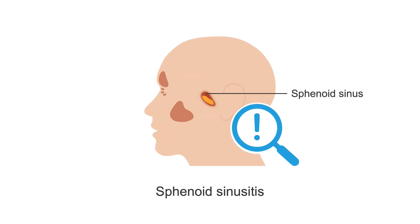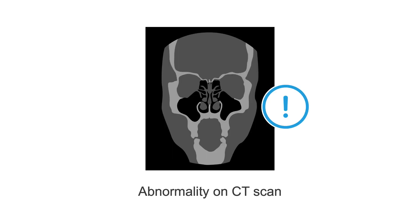Sphenoid sinusitis is more difficult to diagnose, is more significant in terms of morbidity, and the symptoms are slightly different. There is usually some abnormality on the CT scan demonstrating mucosal thickening, clouding, sclerosis and perhaps air fluid levels in the ethmoid sinuses. However, CT is not specific for bacterial sinusitis.